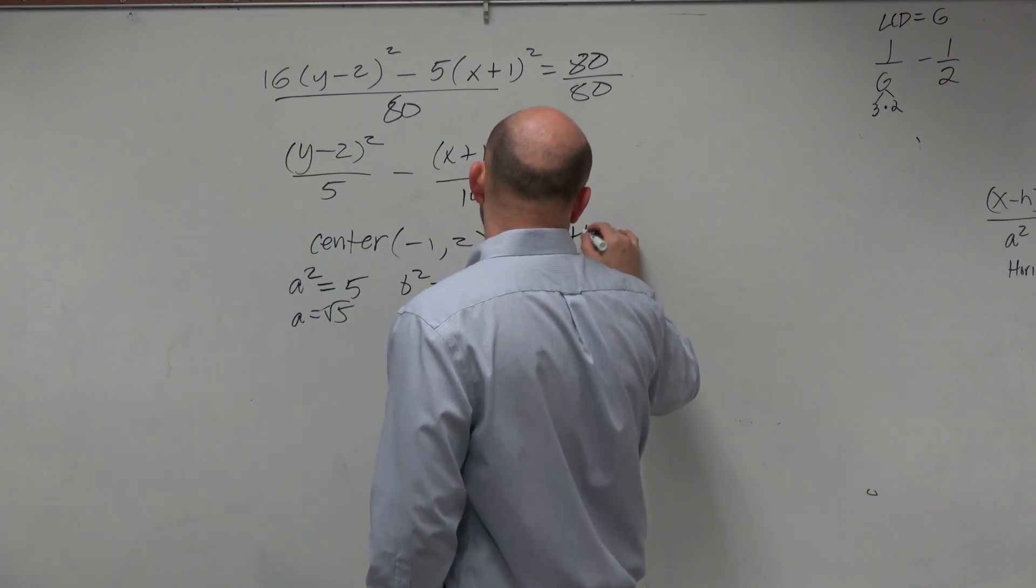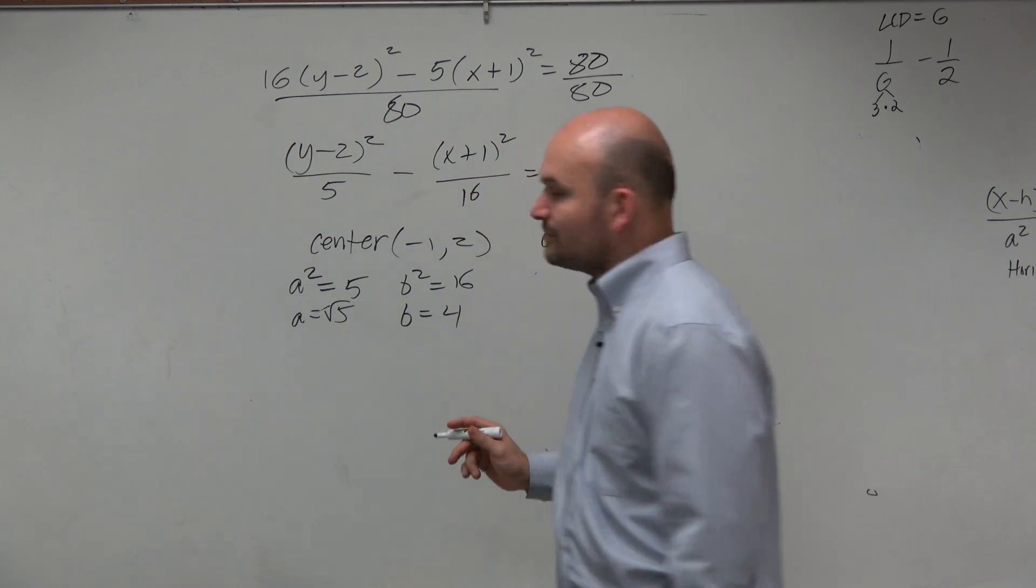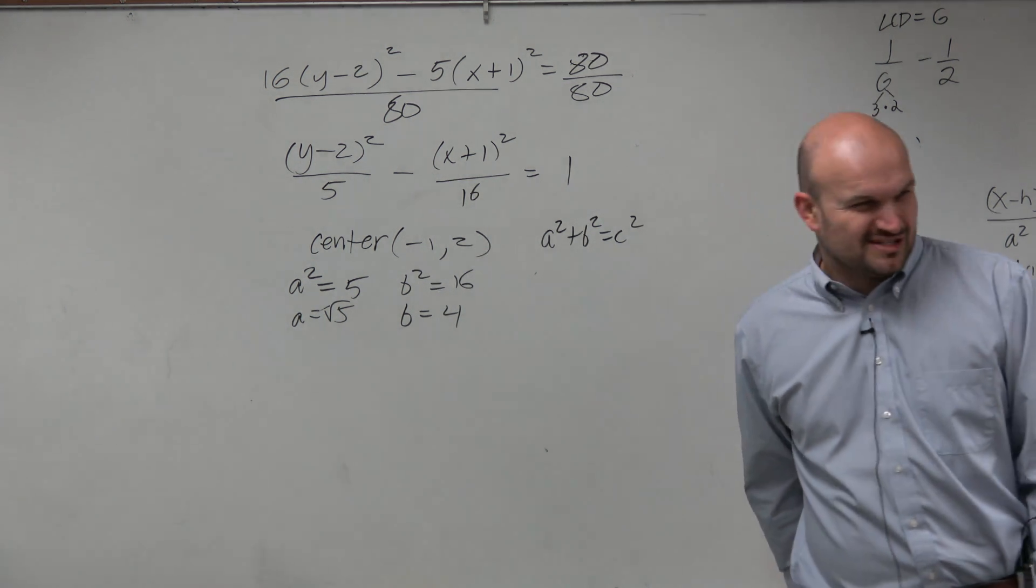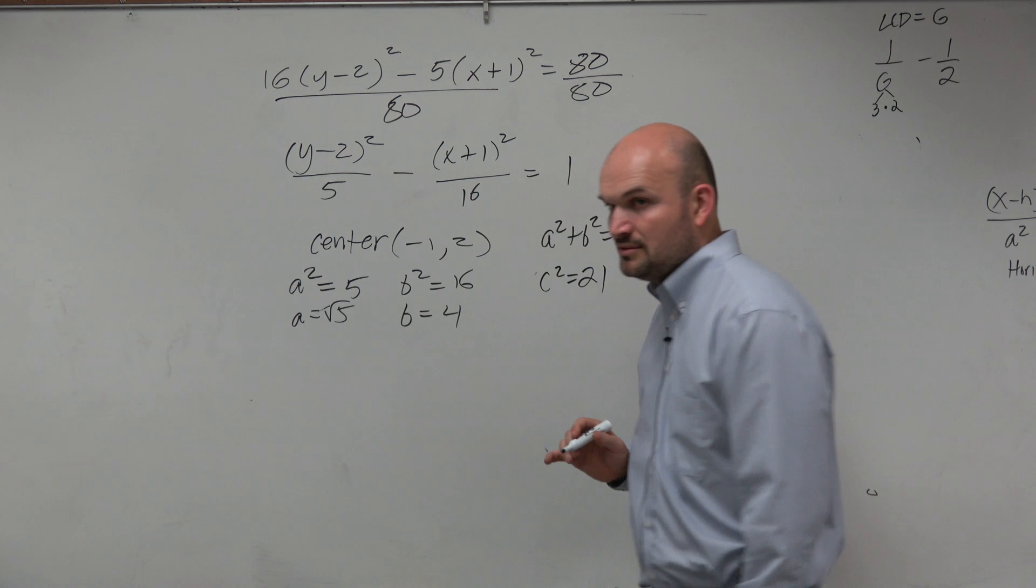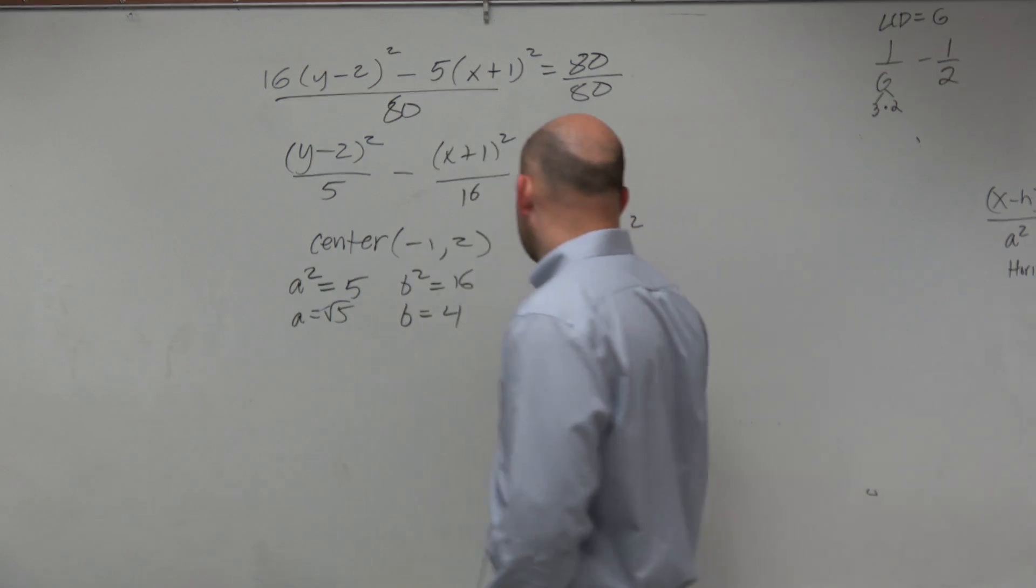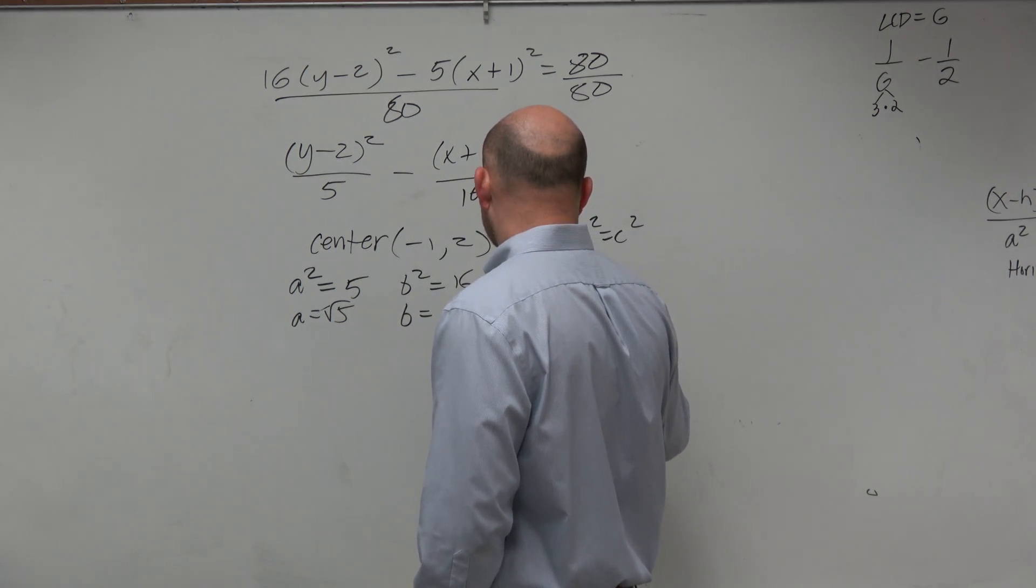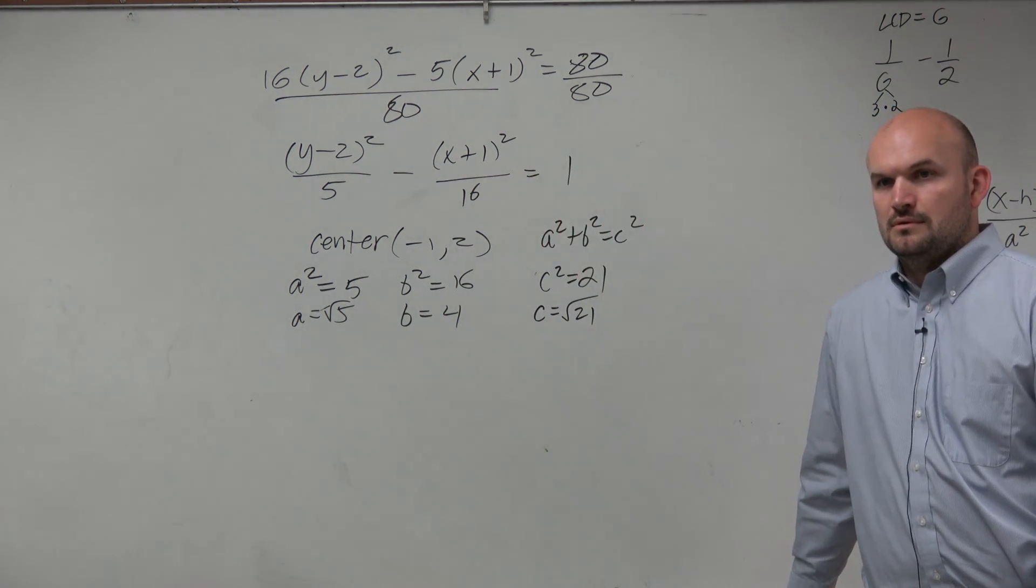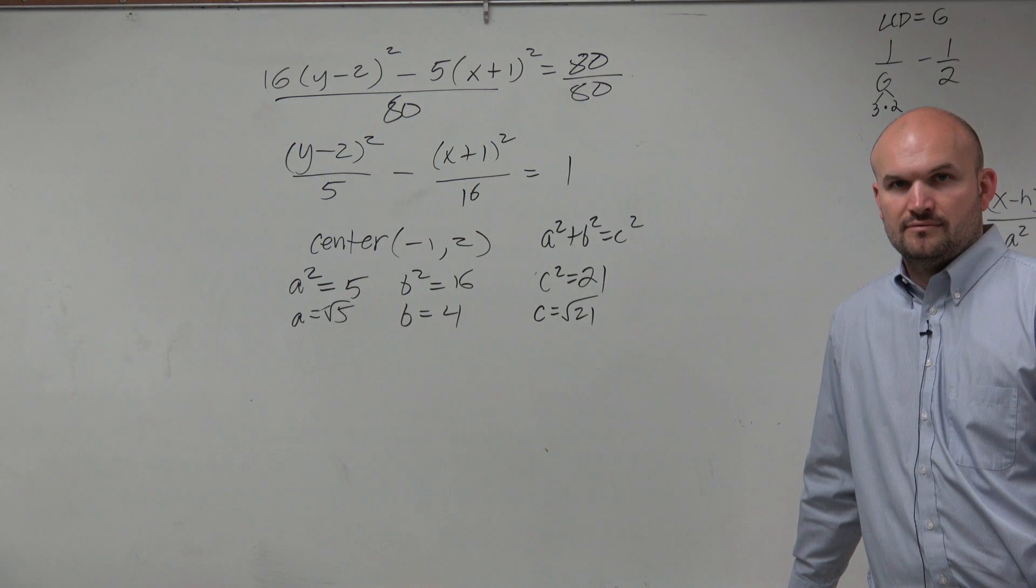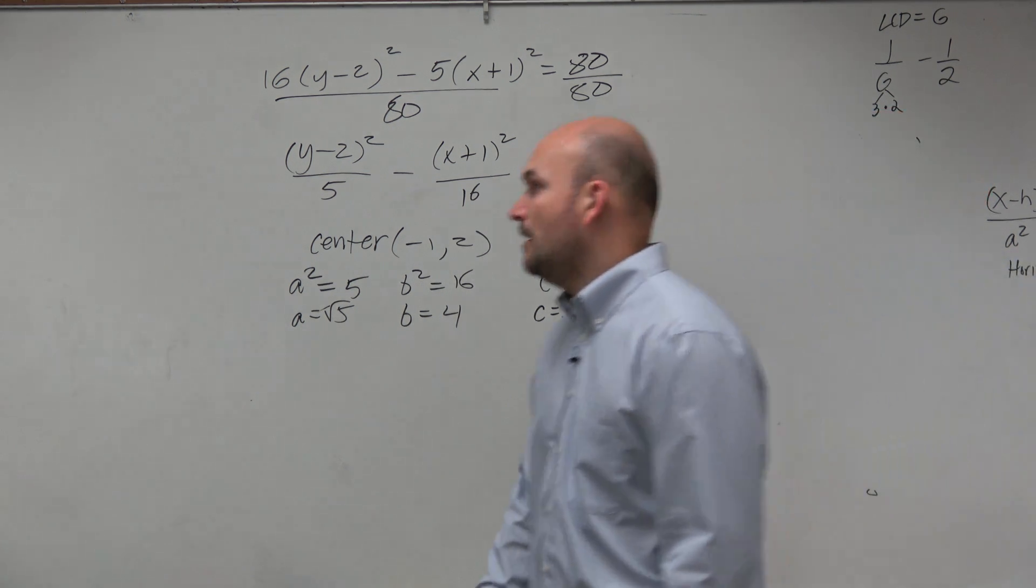And then remember, a² plus b² equals c² represents the relationship. Is it OK if I do the math in my head and say c² is equal to 21? Right, 21. Well, c is equal to root 21, right? Are we OK from there? Yes. All right.